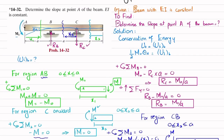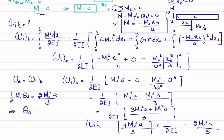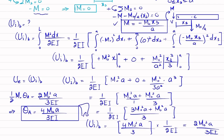Using conservation of energy: (1/2) M0 times theta_A = 2 M0² A / (3EI), because strain energy due to external work equals strain energy due to bending. Solving for theta_A: theta_A = 4 M0 A / (3EI). This is the slope at point A, and the final answer to problem 14-32.